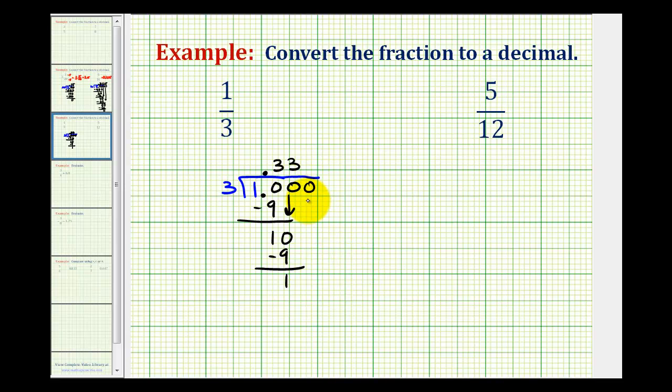So if we add another zero and bring it down, we have the same question over and over again. How many threes are there in ten? Well, again, that's three. Three times three is nine. We subtract. And so you can see the pattern here. This three is going to continue or repeat forever.